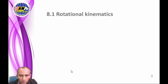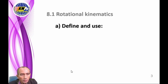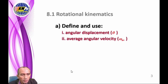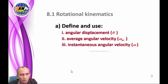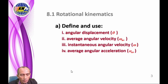We call these quantities 'angular' quantities. There are five types of angular physics quantities: first, angular displacement; second, average angular velocity; third, instantaneous angular velocity; and average angular acceleration.